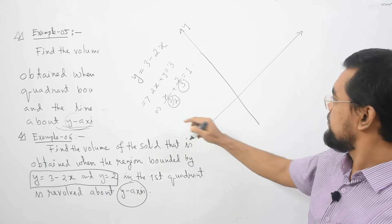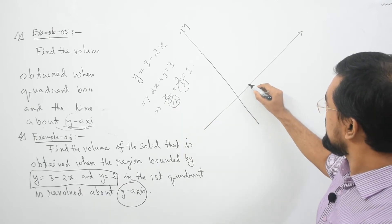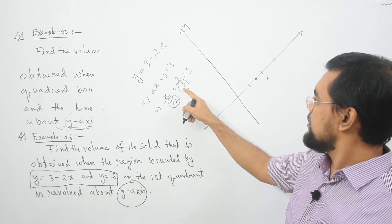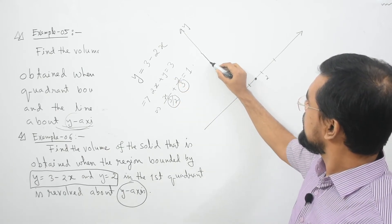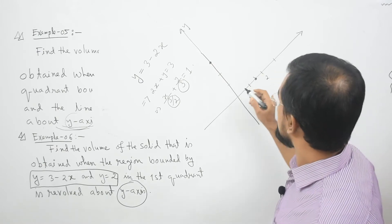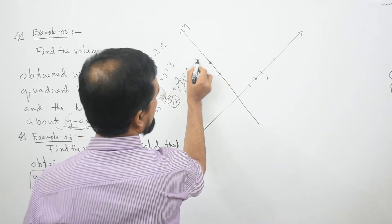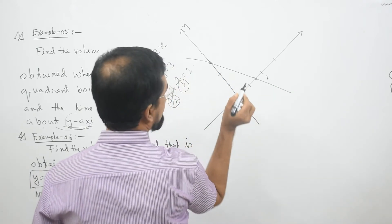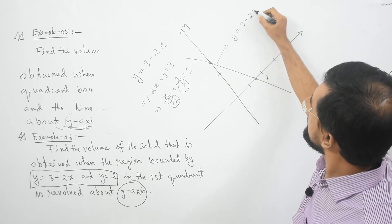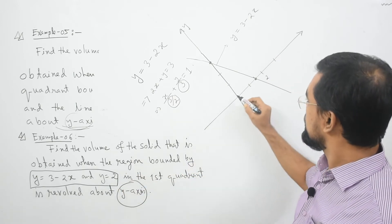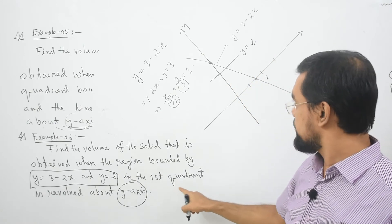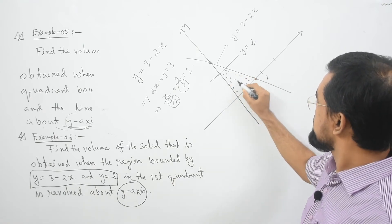So our x-intercept is 1.5, and y-intercept is 3. We can easily sketch this line, which is y equal to 3 minus 2x. And another one, y equal to 2, is this line. In the first quadrant, this is the region — the plane region we want to revolve.